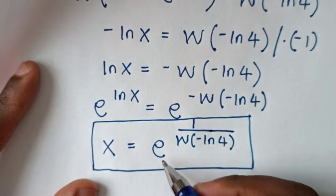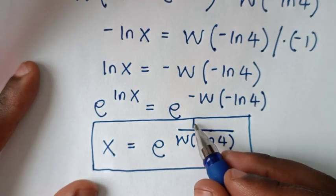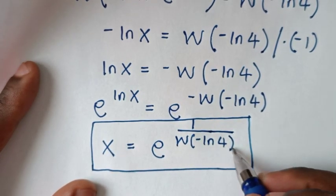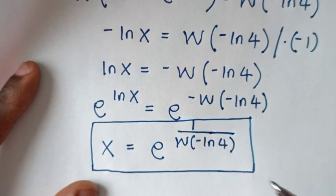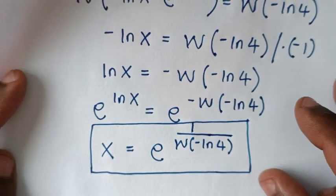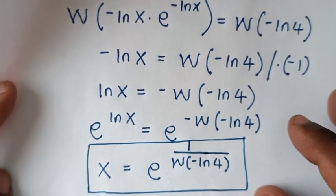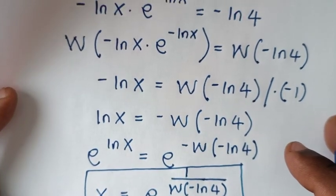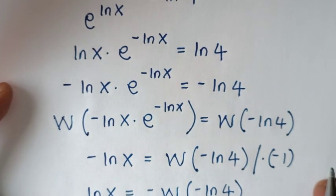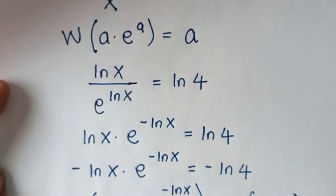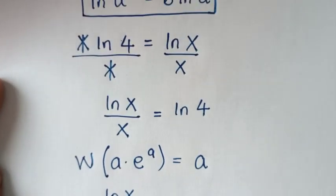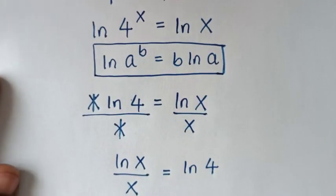So the final answer is x equals e to the power of 1 over W of negative ln(4). Thank you for watching — don't forget to subscribe to my channel and see you in the next video, bye bye.